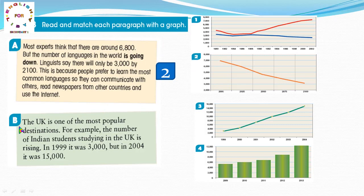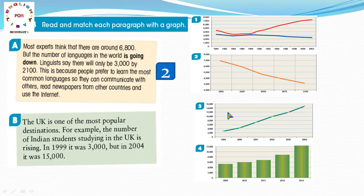Paragraph B: The UK is one of the most popular destinations. المملكة المتحدة واحدة من أكثر الوجهات الشيوع. For example, the number of Indian students studying in the UK is rising steeply، معناها في صعود بشكل حاد. الرسم هذا بادي من ثلاثة ألف وماشي في شكل تصاعدي is rising. إذن paragraph B is for graph 3.